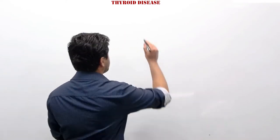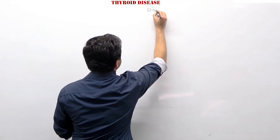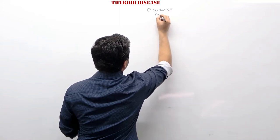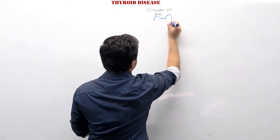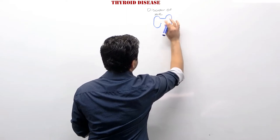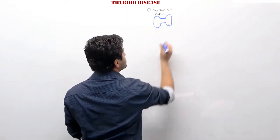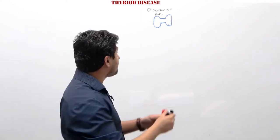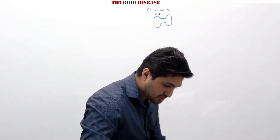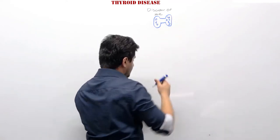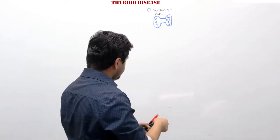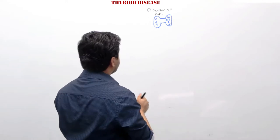Let's talk about disorders of the thyroid gland. Instead of just writing, I'll draw the image of the thyroid gland. The thyroid gland looks like this, and it has parafollicular cells. The thyroid gland usually has a lot of follicles — let me draw those in so you can see them. There are a lot of follicles, which you know from your basic physiology and anatomy.